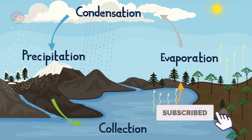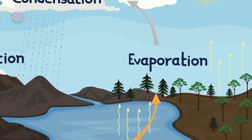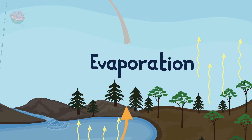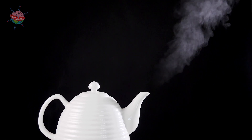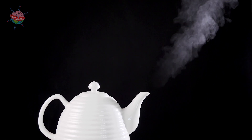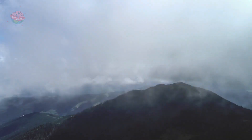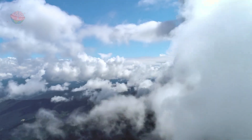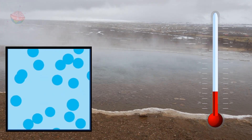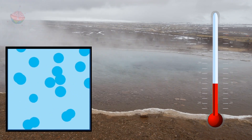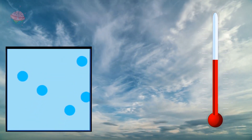The Water Cycle. Evaporation is the process that happens when liquid turns to gas and rises into the atmosphere to form rain clouds. This is a chemical reaction that takes place when the temperature rises, changing liquid to gas.